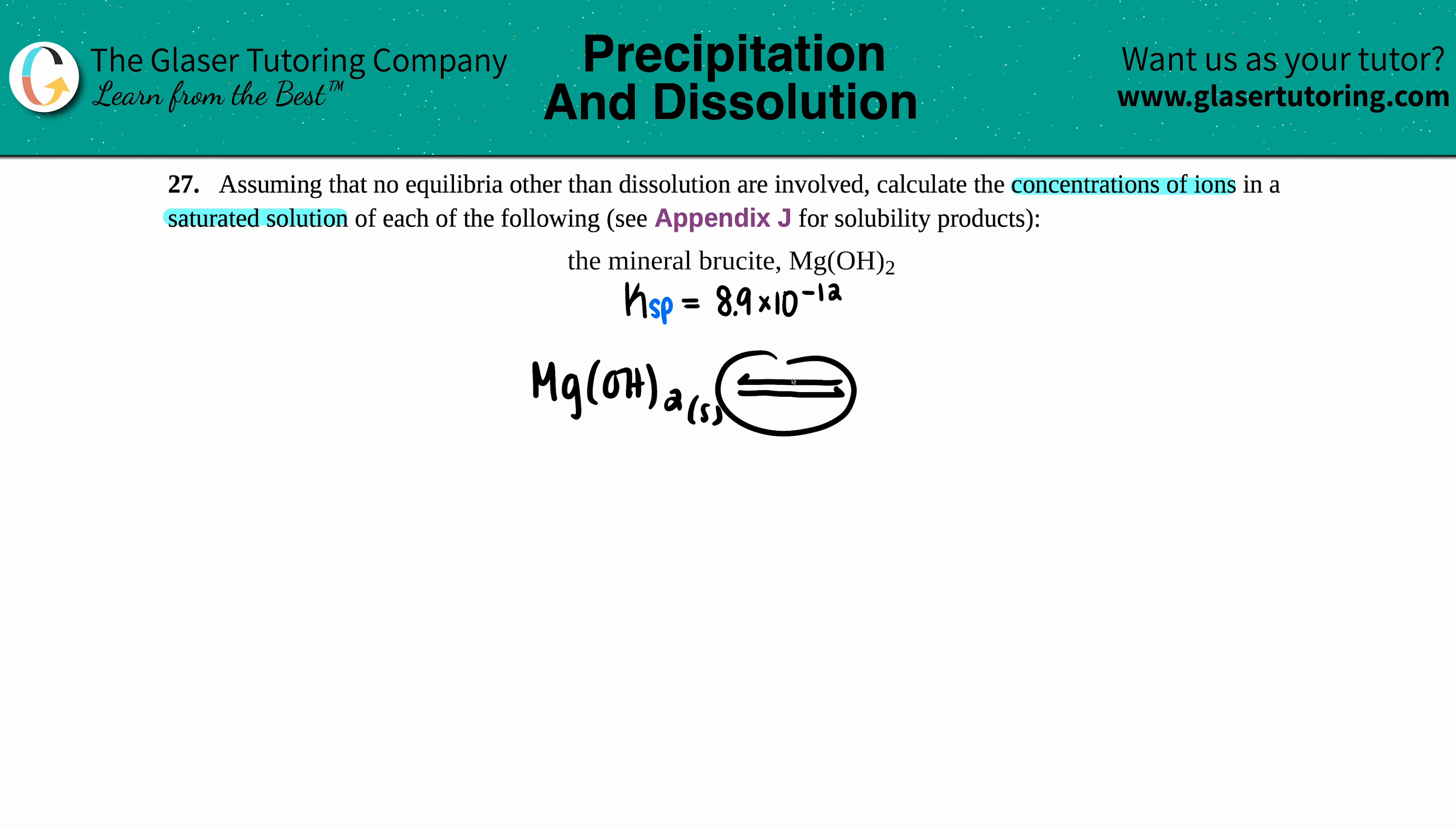This will break up with a double arrow (Ksp equilibrium) into its two ions. Hydroxide always stays together—that's a polyatomic ion—so the break is between the magnesium and the hydroxide: Mg²⁺ and OH⁻. Hydroxide is always negative one for an ionic compound, and magnesium is group two on the periodic table, so all group twos are plus two.